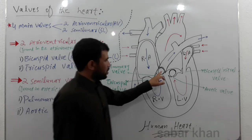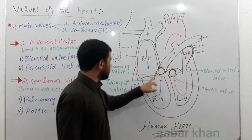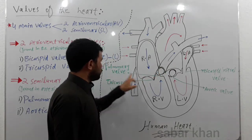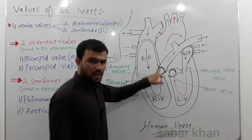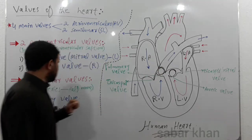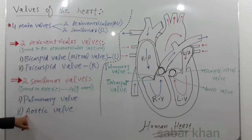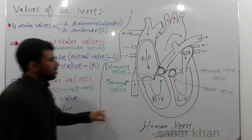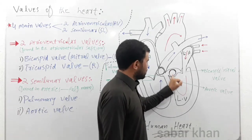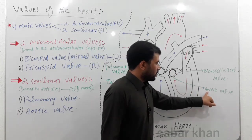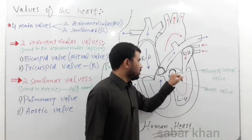The pulmonary valve is present in the pulmonary artery. The second semilunar wall is the aortic valve, which is present in the aorta.